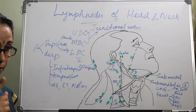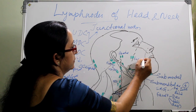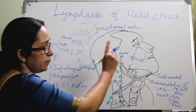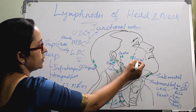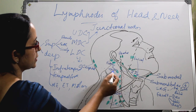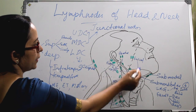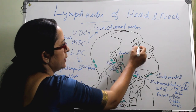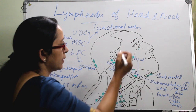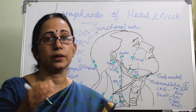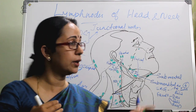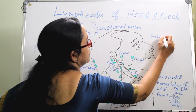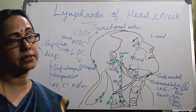Over the buccinator muscle lies the buccal node, and they will drain into the submandibular node. Along with the buccal nodes, there are small nodes in the infraorbital area, the mid-mandibular area, and the malar area. These — infraorbital, malar, mid-mandibular, and buccal nodes — are collectively called the facial group of nodes, because they are situated on the face.